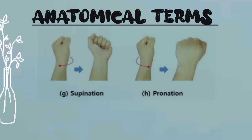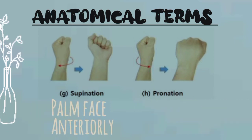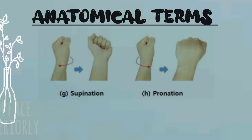The last terms used for the forearm are pronation and supination. Pronation is rotating the forearm medially such that the palm of your hand faces posteriorly. Supination is turning the forearm laterally from the pronated position so that the palm of your hand faces anteriorly.